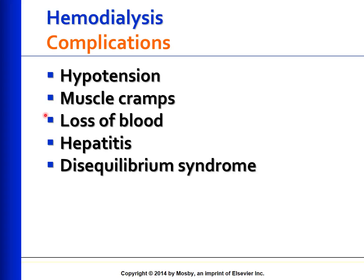Hepatitis B had an unusually high prevalence in dialysis recipients, but the incidence today is quite low. Lower blood transfusions, screening, and hepatitis B vaccinations have lowered the incidence. Currently, hepatitis C is responsible for the majority of cases of hepatitis in dialysis recipients.